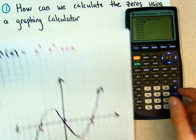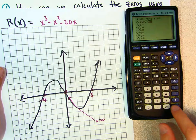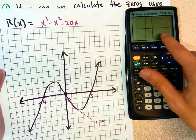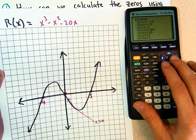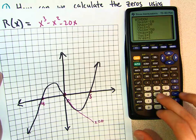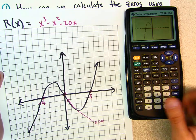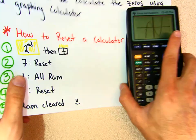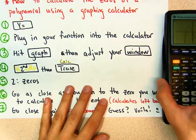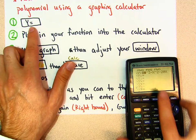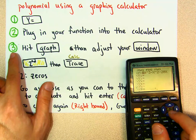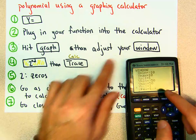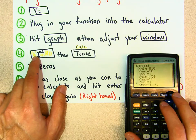Let's plug the function back in. So if I have x to the third minus x to the second minus 20x, and I hit graph — again you see how it doesn't show us everything. Let's go back to window and change the numbers: y min to negative 50 and y max to 50. Hit graph — and now it's giving us a nice view. We know what the zeros are, but how does the calculator tell you exactly? So let's take a look.